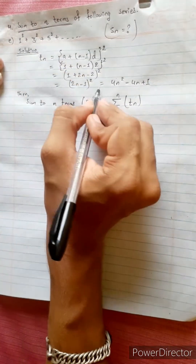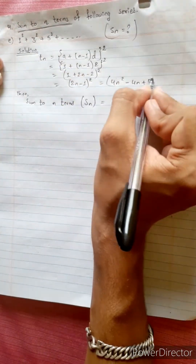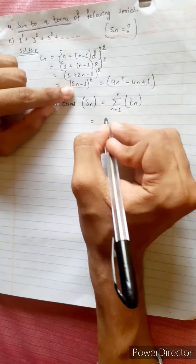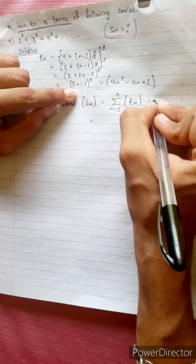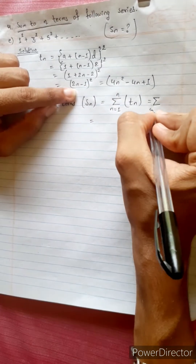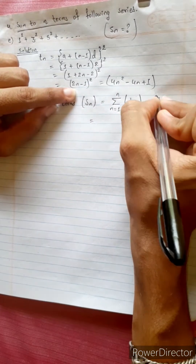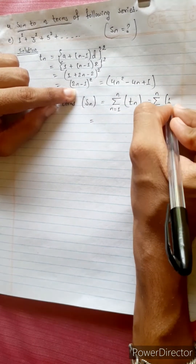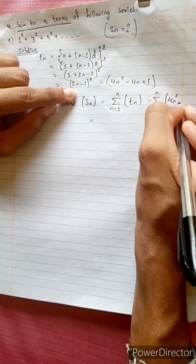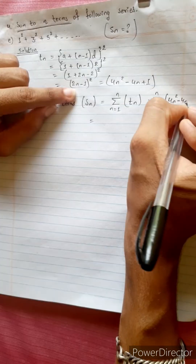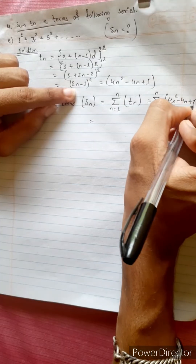Where tn is this, so we write this in place of tn: summation n equals 1 up to n of 4n squared minus 4n plus 1.